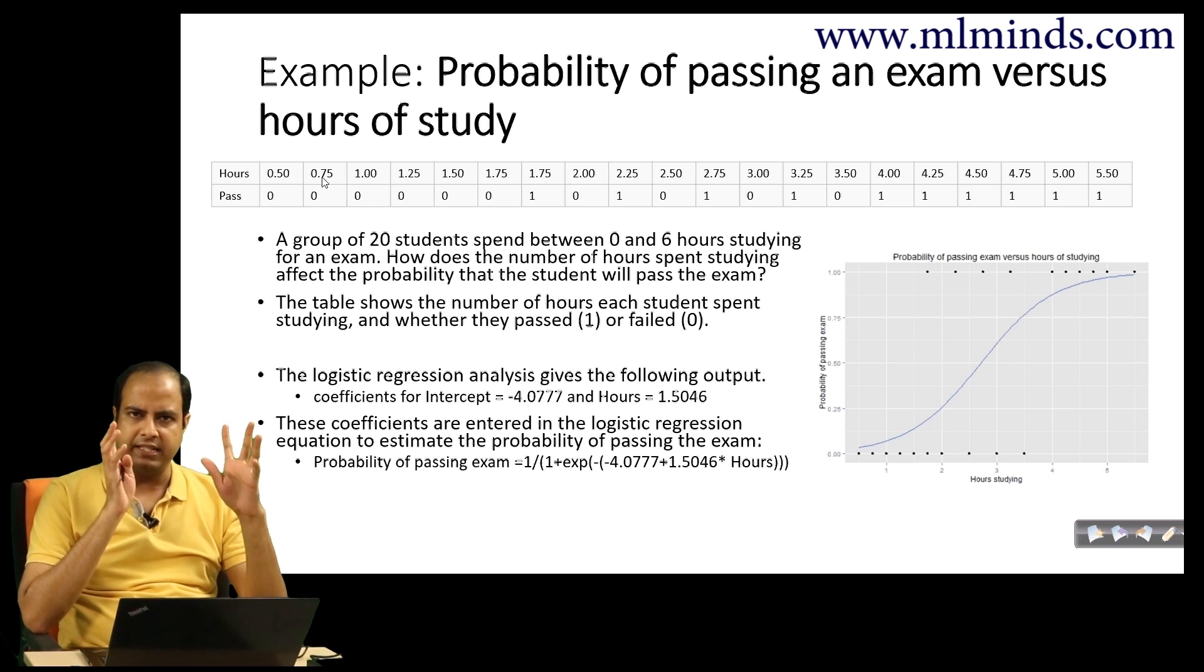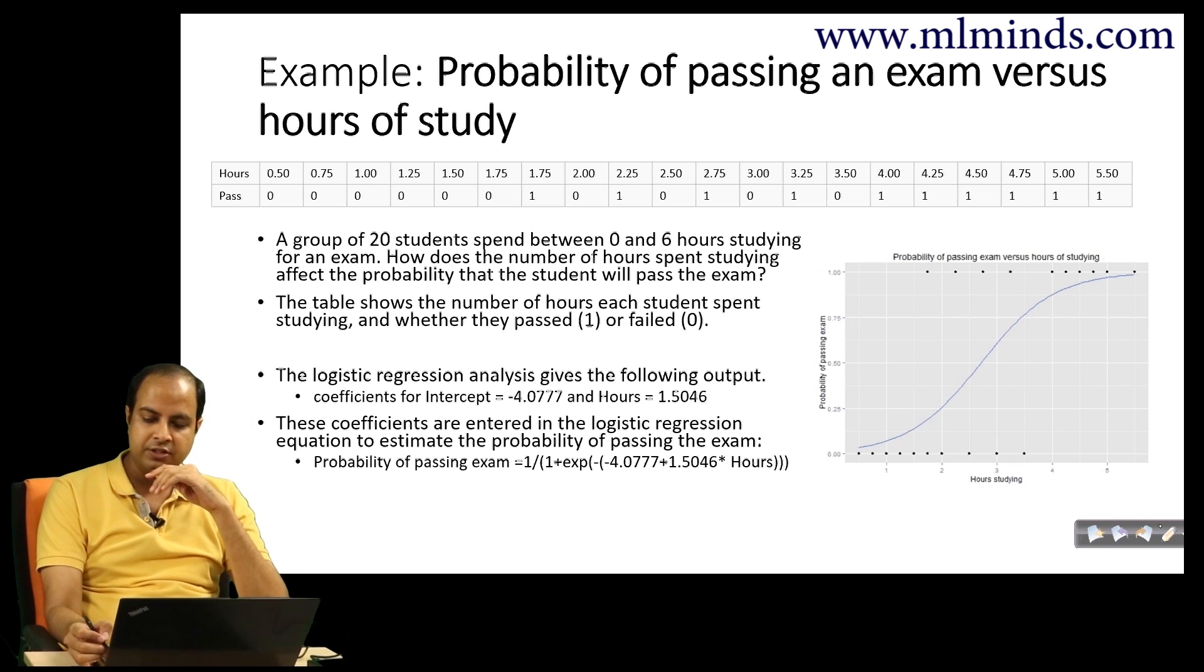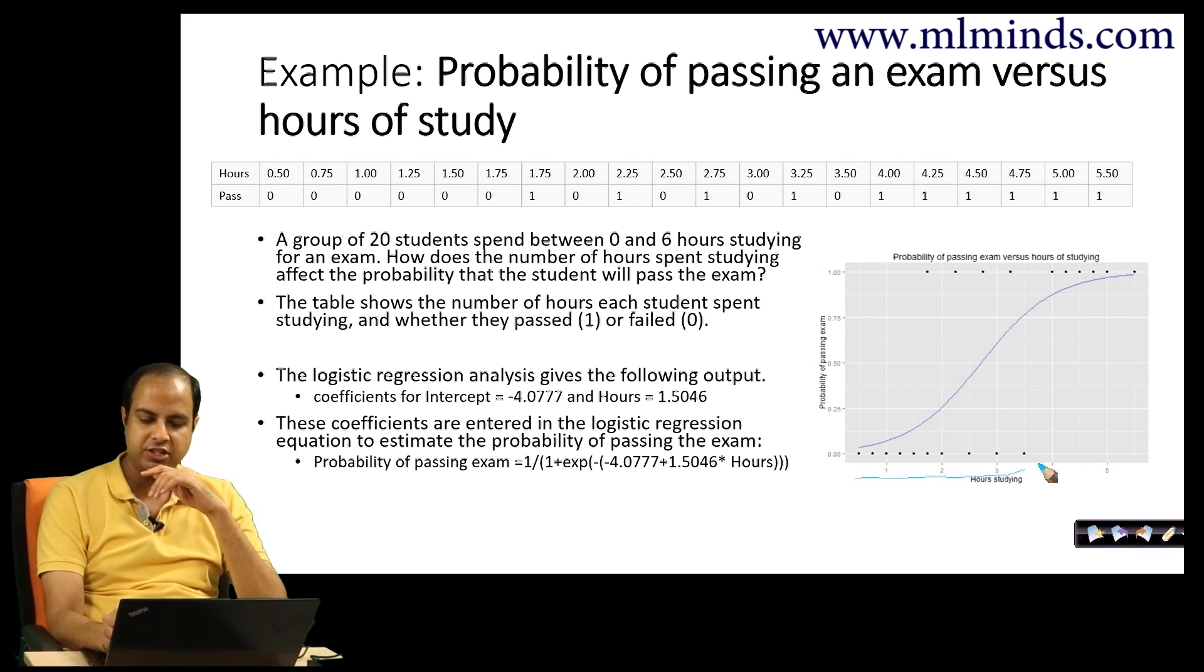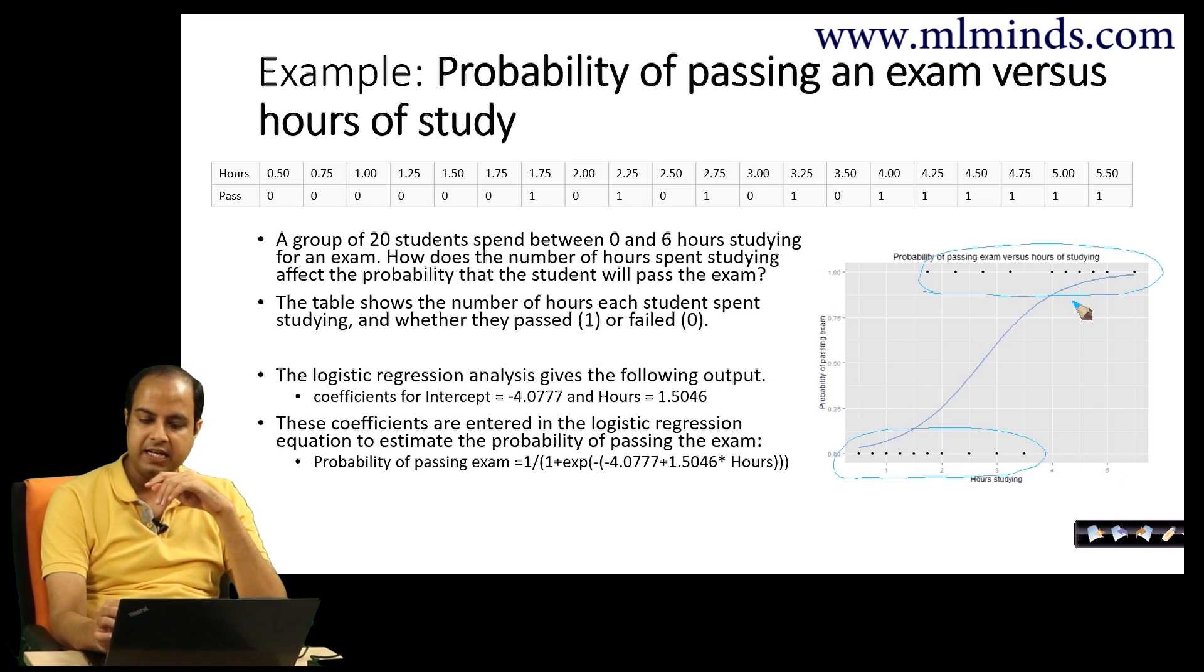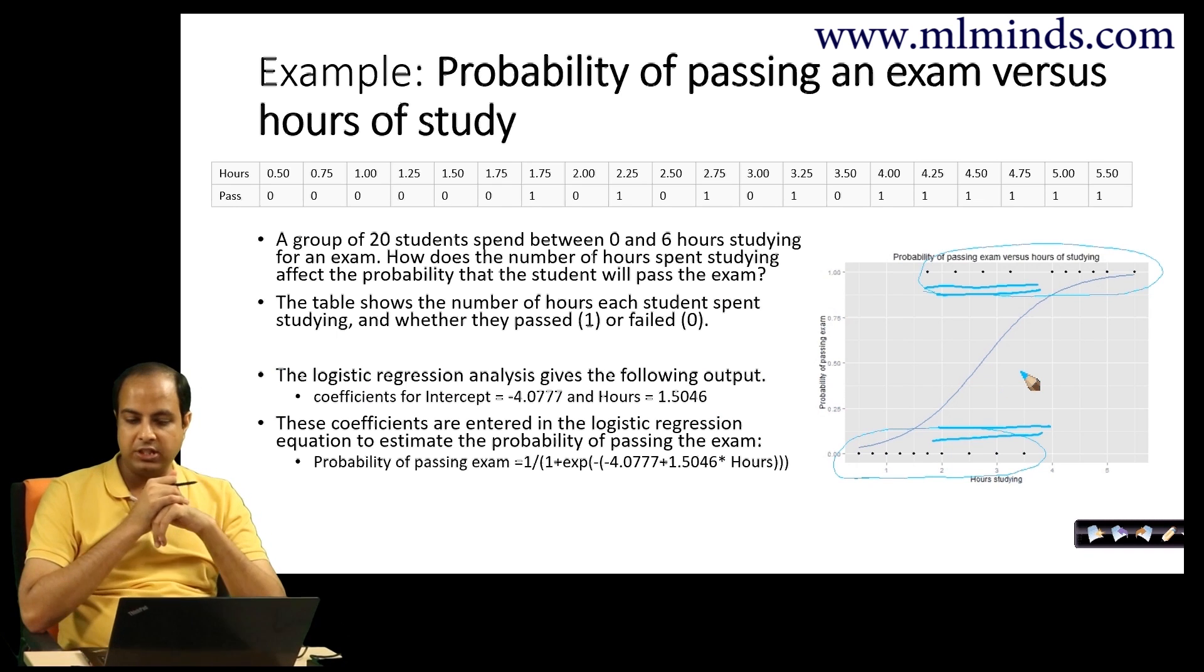From this graph, people who study less essentially failed, and people who studied more essentially passed. But there's something important to notice: there are some cases in between which are overlapping in the two classes. The table shows the number of hours each student spent studying and whether they passed or not.